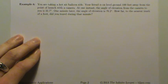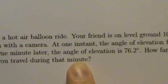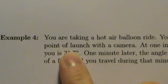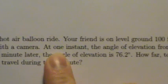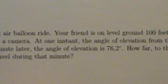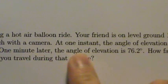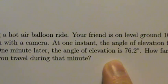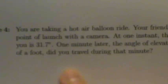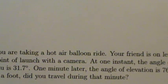Example four: you're taking a hot air balloon ride and your friend is on level ground 100 feet away from the point of launch with a camera. At one instant the angle of elevation from the camera to you is 31.7 degrees. One minute later the angle of elevation is 76.2 degrees. How far, to the nearest tenth of a foot, did you travel during that minute?